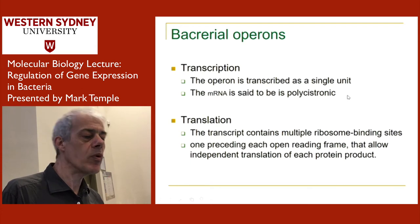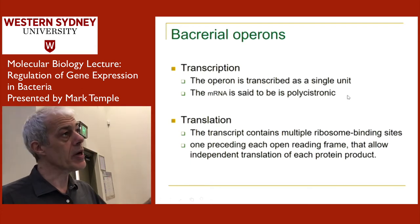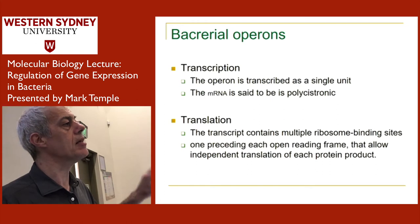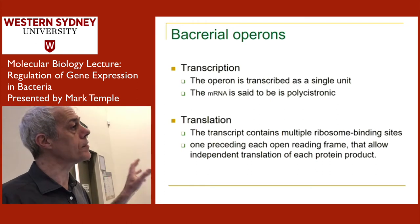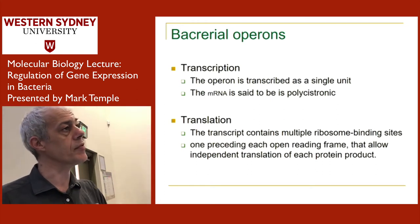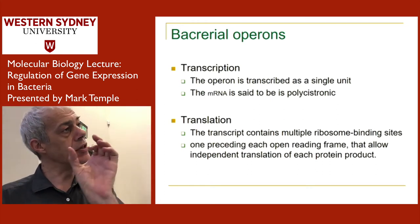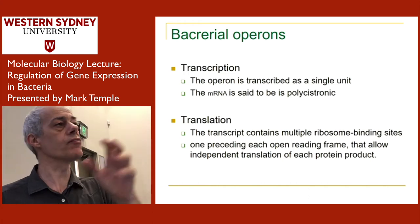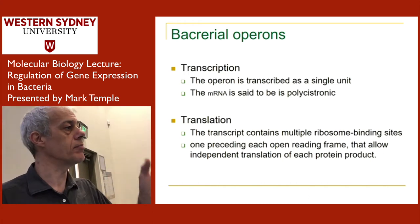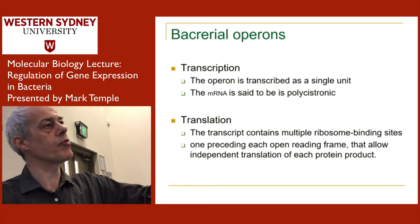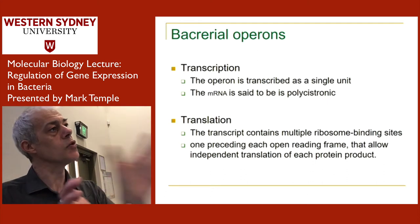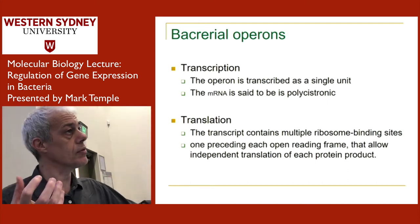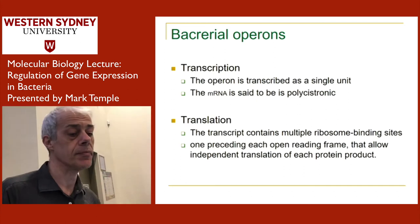When we looked at eukaryotes, we talked about alternative splicing to get different proteins from one gene. This is really different — these are actually different exons, and they always give rise to the same protein. So you've got three exons giving rise to three proteins, and there's one promoter for those three genes.